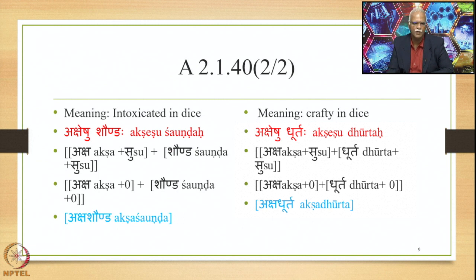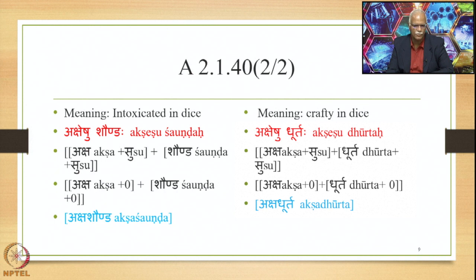The group of words beginning with Shaunda also includes the word Dhurta. So for the meaning 'crafty in dice' — Aksheshu Dhurtah — the Alaukika Vigraha is Aksha plus Su plus Dhurta plus Su. This is a Pratipadika, the Sus are deleted by Supodhatup Pratipadika Yoho, and we get the finally derived output Aksha Dhurta.